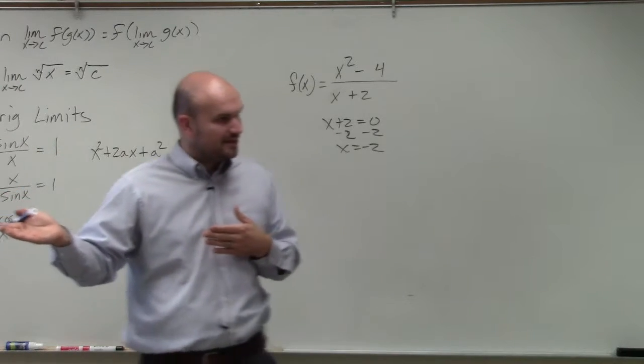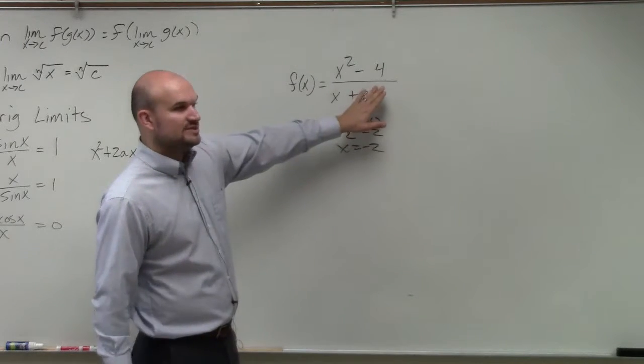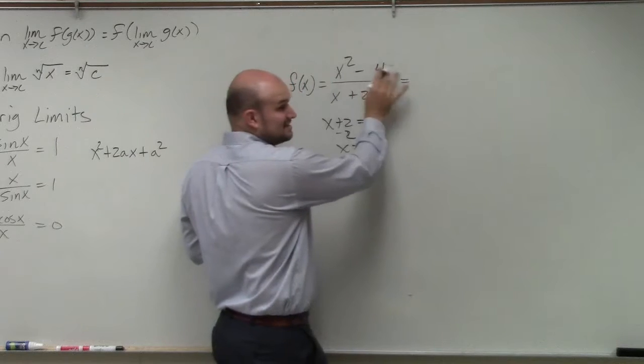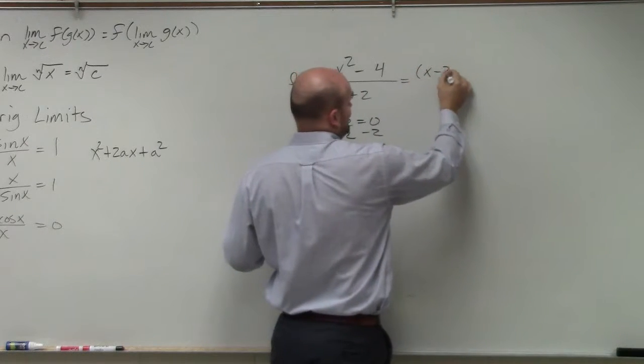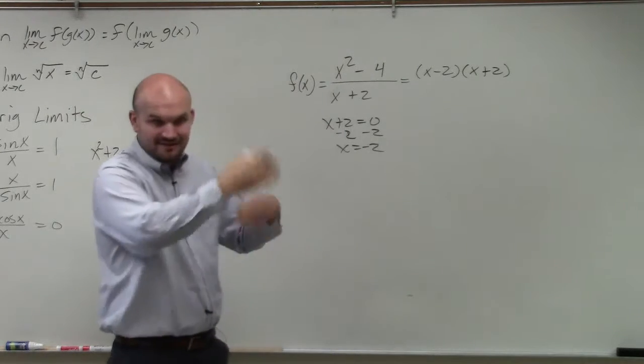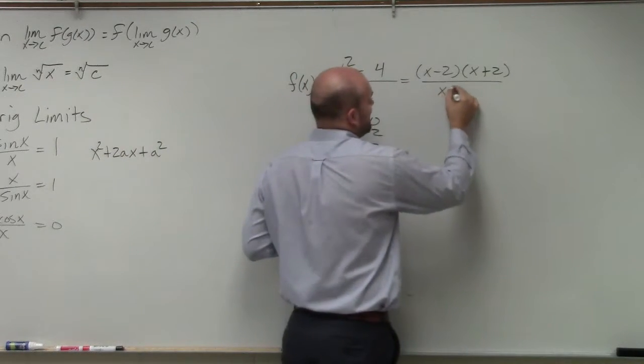Now we just need to determine if it's a hole. The way to do that is to simplify the expression. So this is a difference of two squares, x minus 2 times x plus 2. See how quickly I factored that? Didn't have to do the diamond or box thing, I quickly factored. And then we have x plus 2.